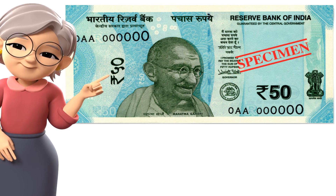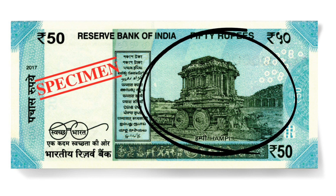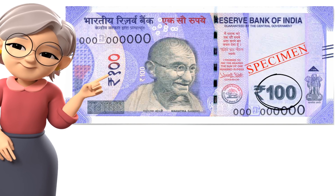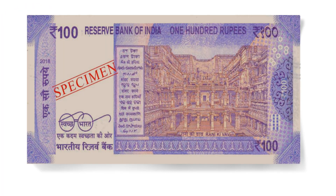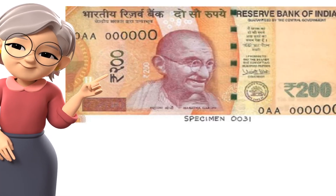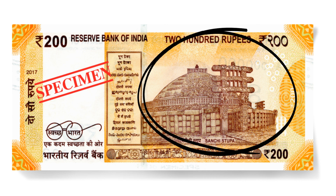This is the note of rupees 50, with a picture of Mahatma Gandhi and the number 50 written on it. This is the note of rupees 200, with the number 200 written on it. The back side of rupees 200 shows an image of Red Fort.